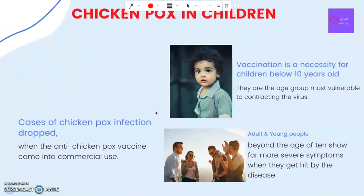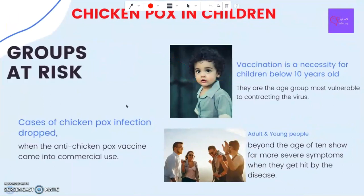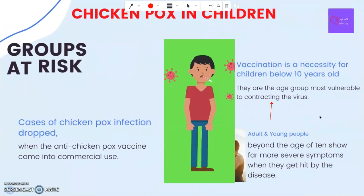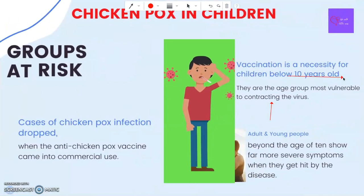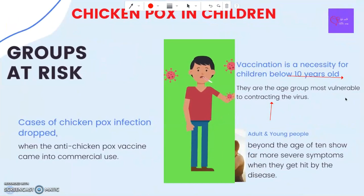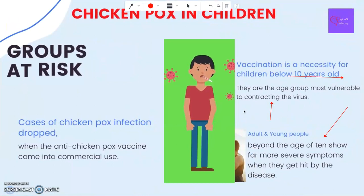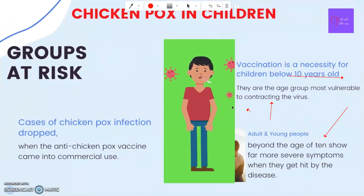Cases of chickenpox infection dropped sharply when the anti-chickenpox vaccine came into commercial use. Vaccination is a necessity for children below 10 years old, as they are the age group most vulnerable to contracting the virus. On the other hand, adults or young people beyond the age of 10 show far more severe symptoms when they get hit by the disease.